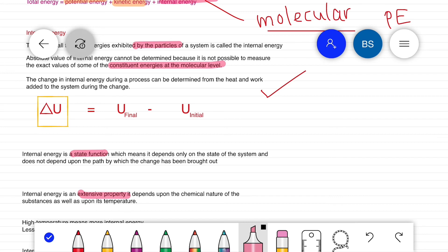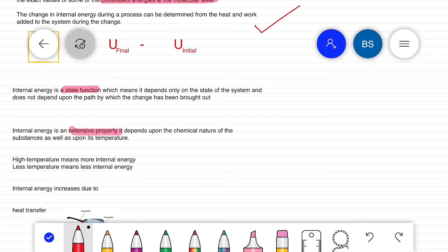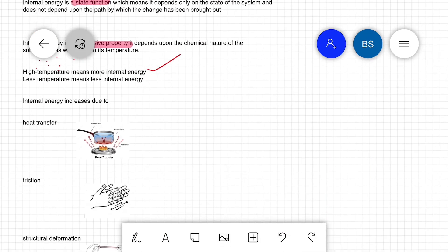Because internal energy is associated with the motion of particles, if we increase the temperature, the movement of the particles increases thereby the internal energy increases. That means high temperature implies more internal energy, less temperature implies less internal energy.